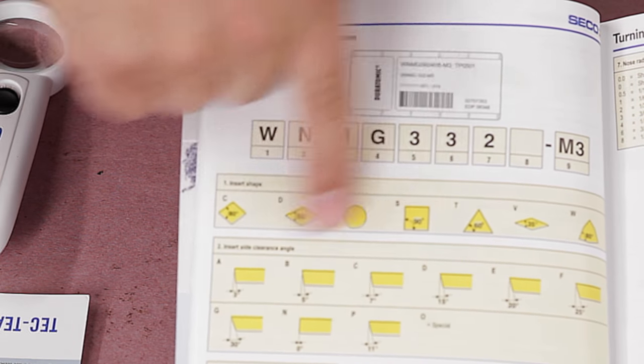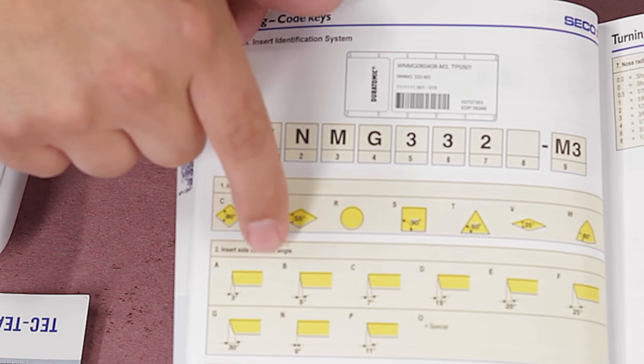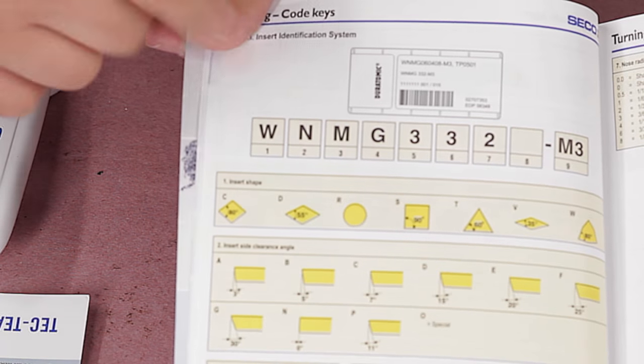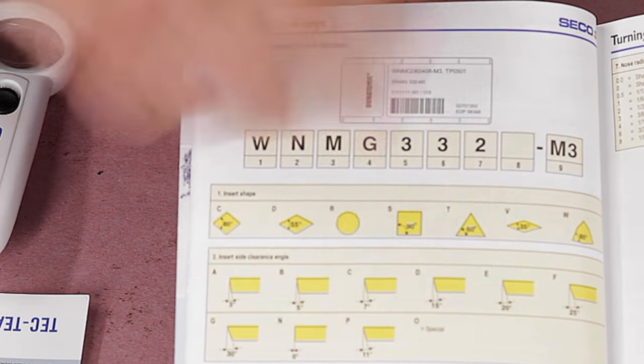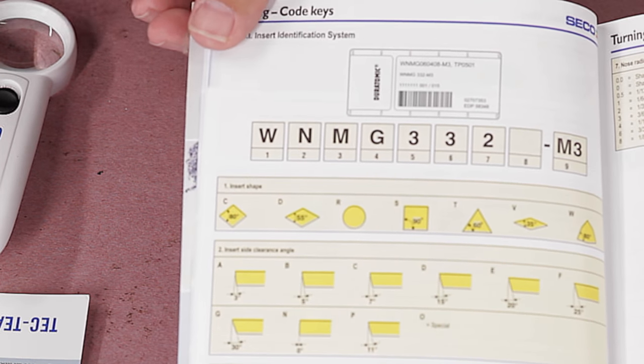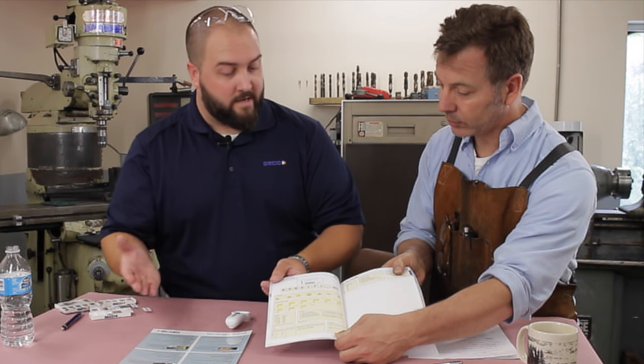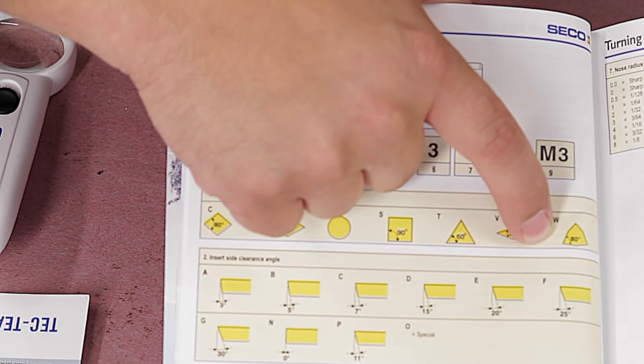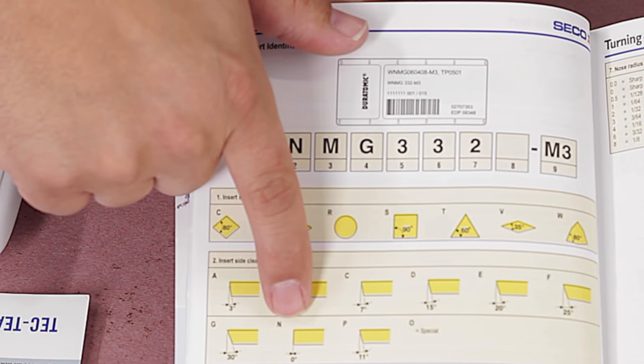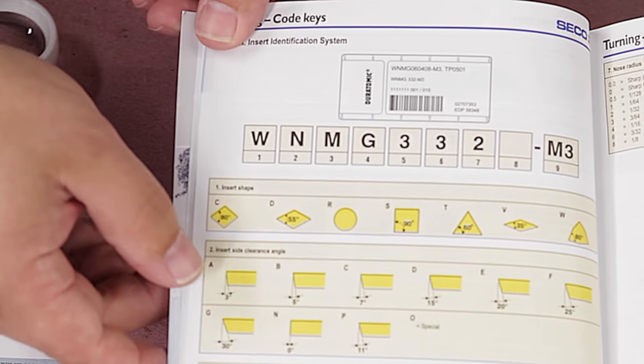Excellent. Speaking about the inserts, different edge preps and whatnot. If you go into the catalog and look on page 18, here is a WNMG 332 M3. This page tells you what each one of those means.